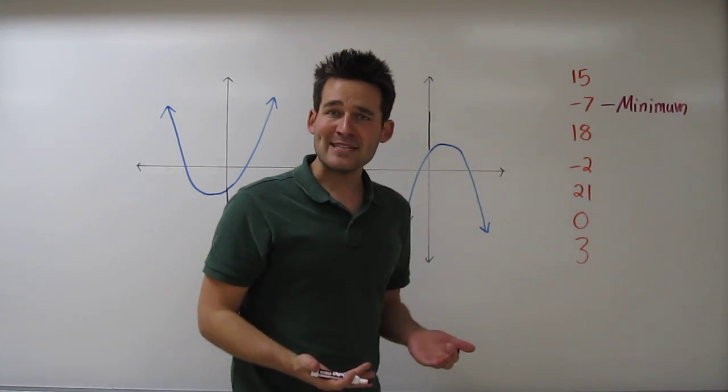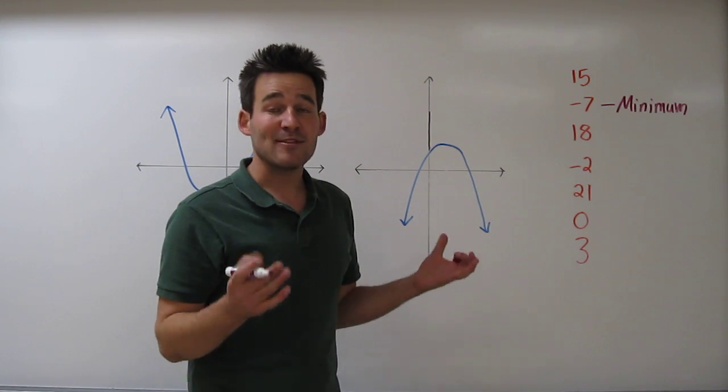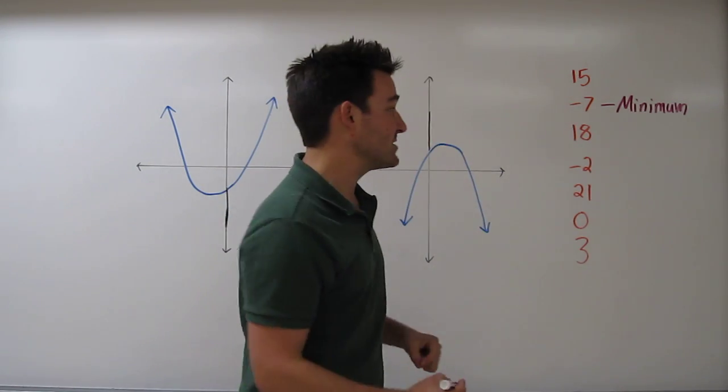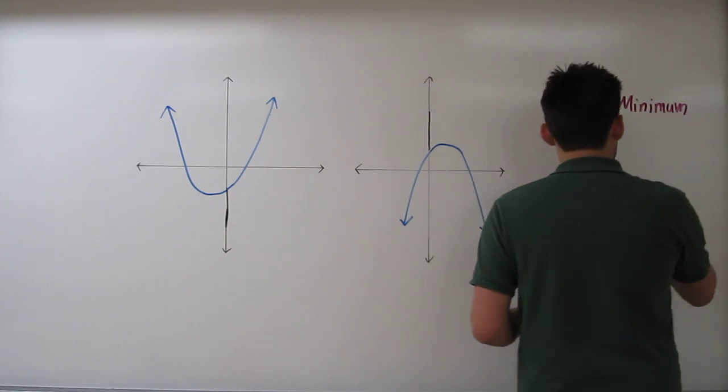Now to find the maximum number, we're going to look through the list again and try to find the greatest number, which looks like 21 is the greatest number. So we call that the maximum.